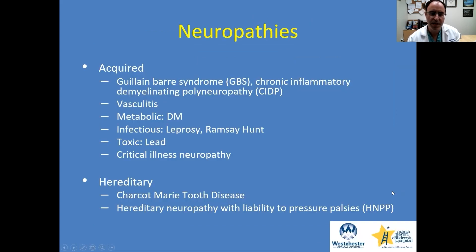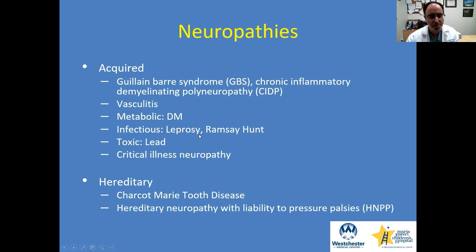There are many different types of acquired neuropathies, and it's useful to think about them in categories. Things you may see include Guillain-Barré, CIDP, vasculitis, metabolic causes like diabetes, infectious causes like leprosy, toxic causes like lead poisoning, and critical illness neuropathy. Always keep in mind whether any of these predisposing factors are at play.